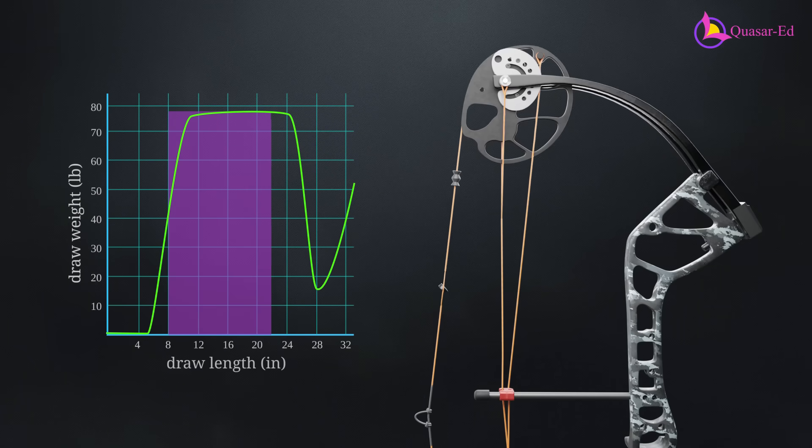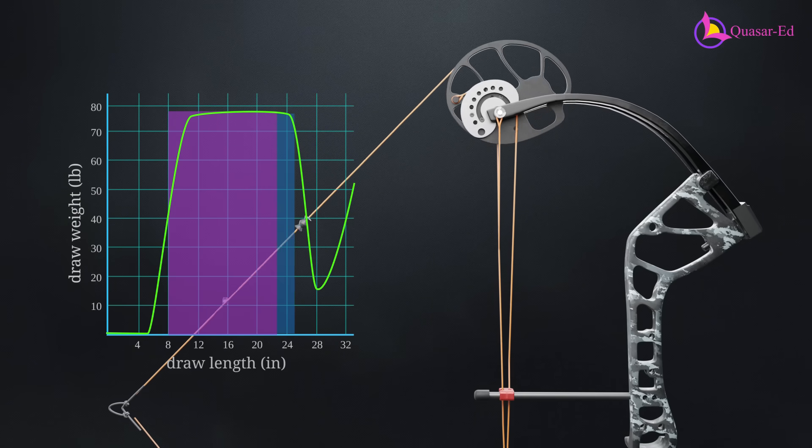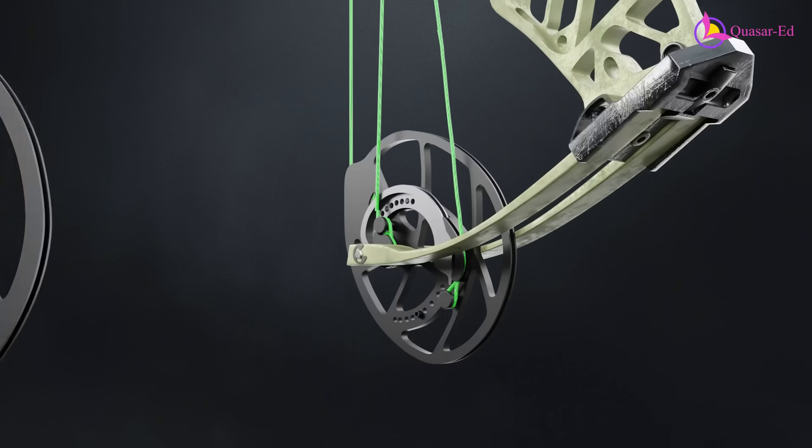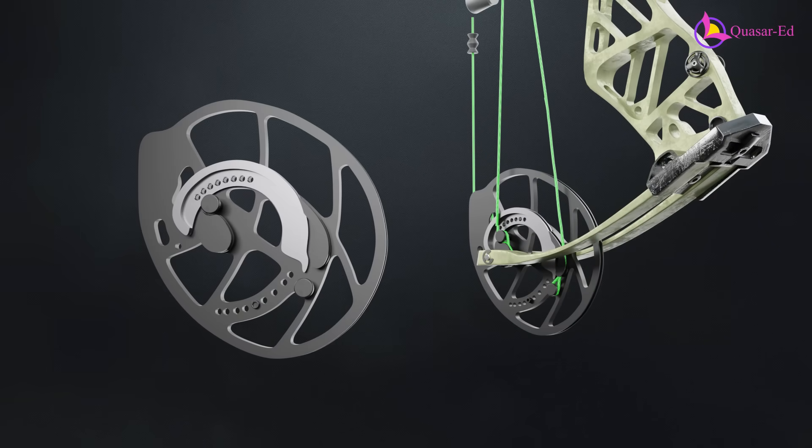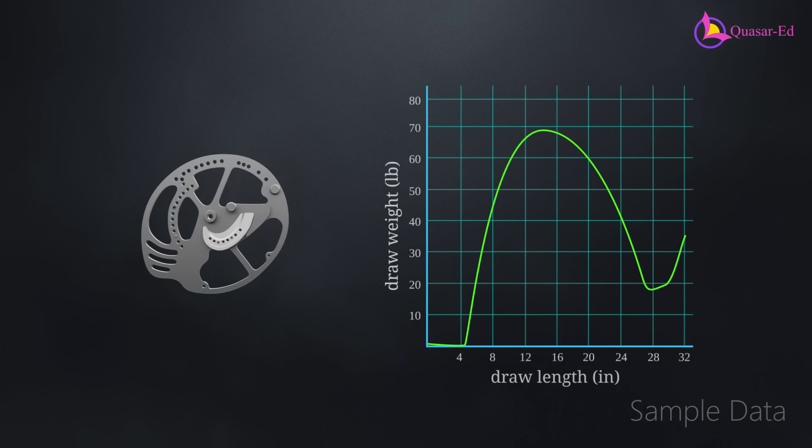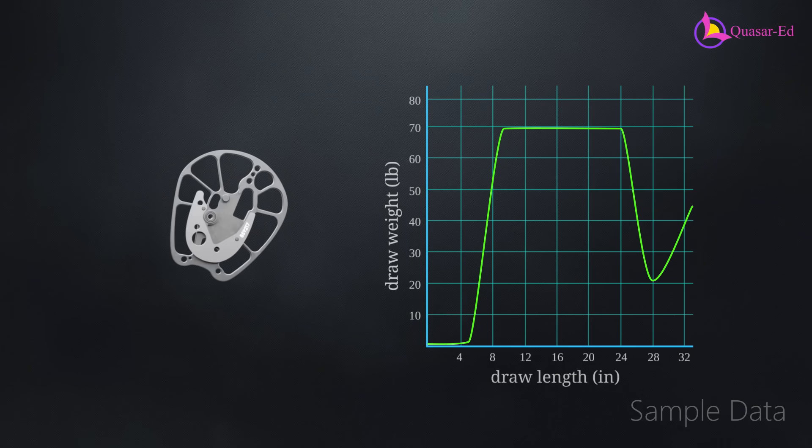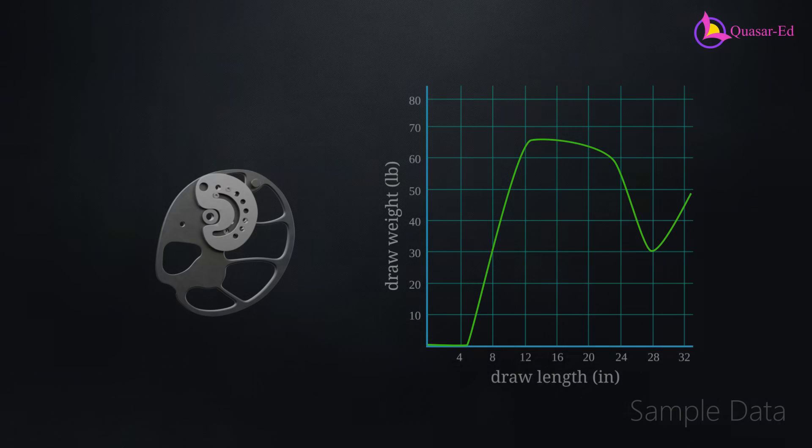Essentially, more force is applied early in the draw, so that less force is needed at the end. In most designs, the inner cam can be adjusted to fine-tune the draw length and let-off of the bow. Different cam profiles produce varying force curves, and choosing the right one depends on personal preference and shooting style.